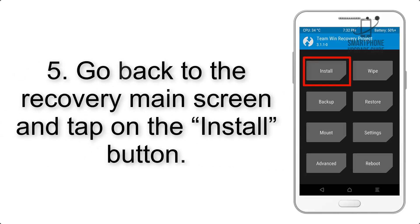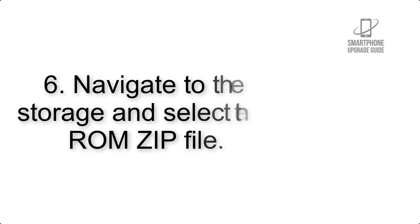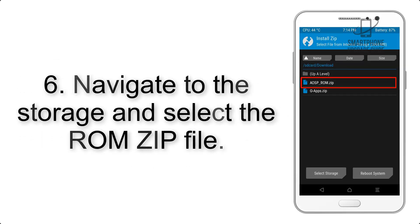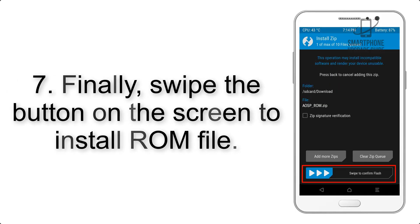Step 4: Swipe the button to wipe the device. Step 5: Go back to the recovery main screen and tap on the Install button. Step 6: Navigate to the storage and select the ROM zip file.